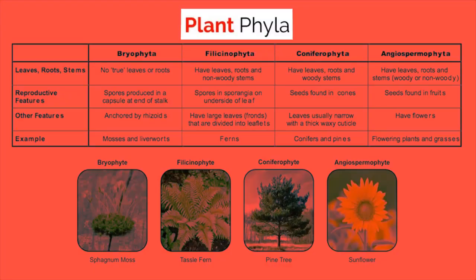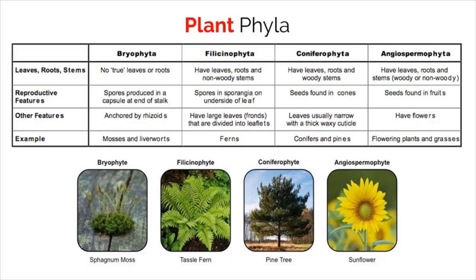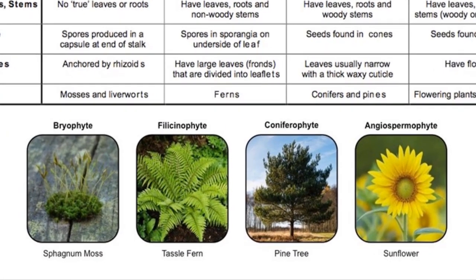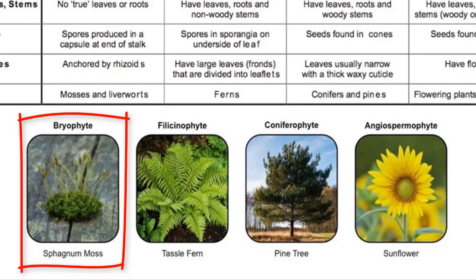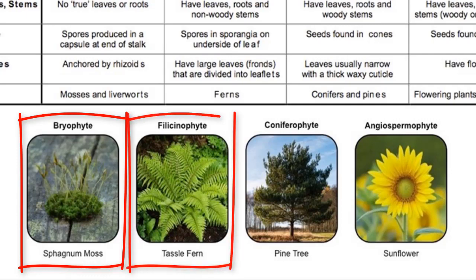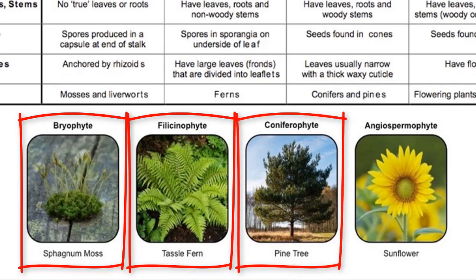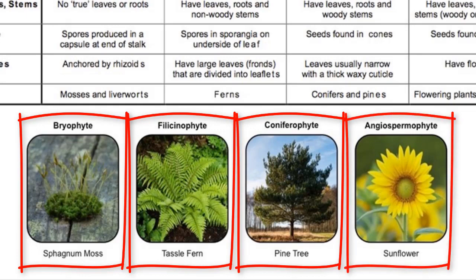For the IB exam, there are four plant phyla and seven animal phyla that you need to be able to recognize. The four plant phyla are Bryophyta, Fillicinophyta, Coniferophyta, and Angiospermophyta. Bryophyta consists of mosses, which are plants that contain no true leaf or root structures. Fillicinophyta consists of ferns, which have leaves and roots but reproduce by creating spores, with very distinct-looking leaves. Coniferophyta consists of conifers and pine trees with heavy woody stems that create cones filled with seeds to reproduce. Finally, Angiospermophyta consists of flowering plants, which have non-woody stems and create fruits with seeds to reproduce.